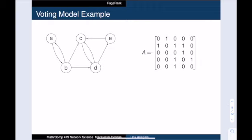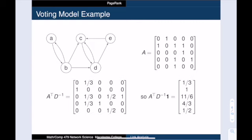Let's look at one update round in this voting model. Here's a directed network on five vertices along with its adjacency matrix. The matrix that encodes our update rule is A transpose times D inverse, where D inverse is the diagonal matrix whose entries are 1 over the out-degree of the vertices in the network. And so the rows of this matrix correspond to the in-neighbors of a vertex, and the columns correspond to the out-neighbors of a vertex.